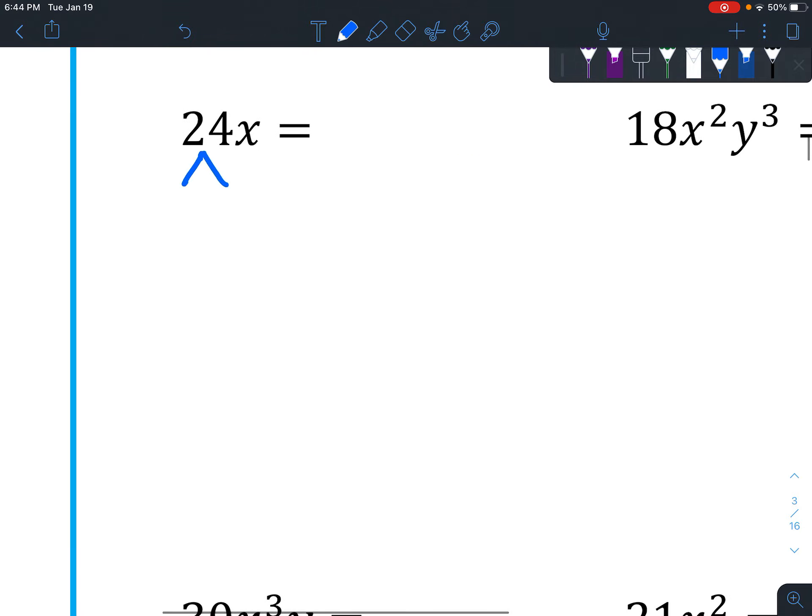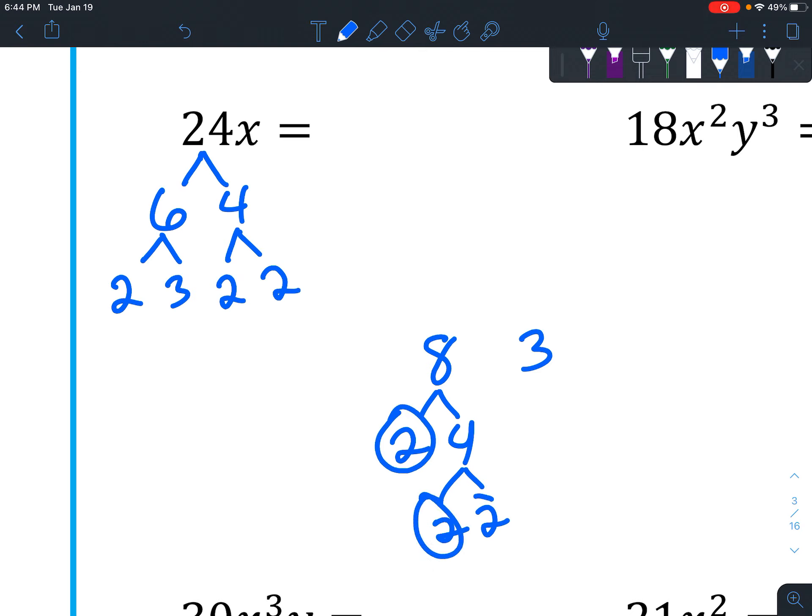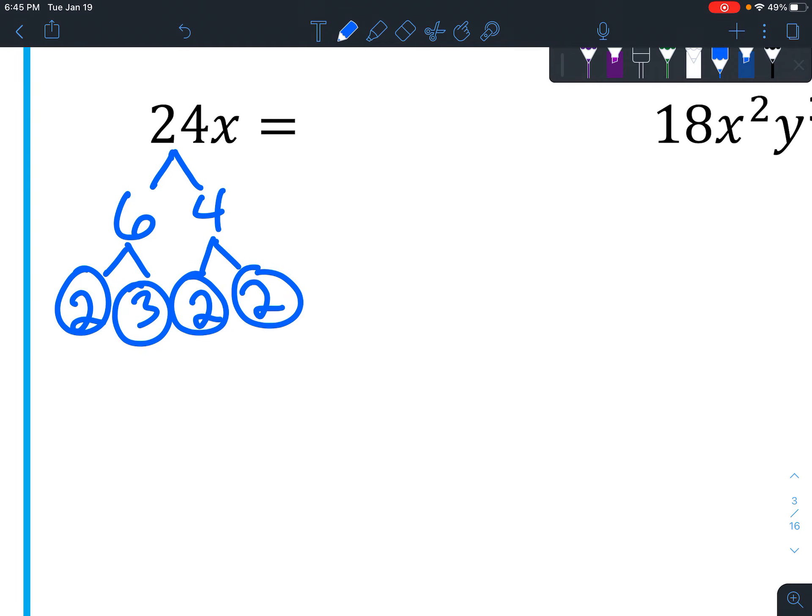Next, 24. You might start with 8 times 3 or 6 times 4. Either way, when you get to the end, all the pieces are the same. If you had started with 8 times 3, you'd have 2 times 4, 2 times 2. See how the factors are actually the same? 2, 2, 2, and 3. It just means you're breaking them in a slightly different order. But in the end, there's only one way to factor it. So we've got 2 times 2 times 2 times 3 and just 1x there.